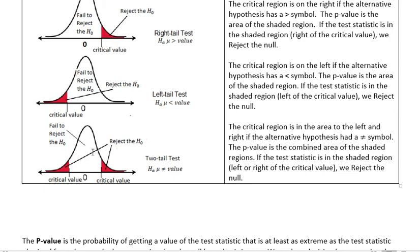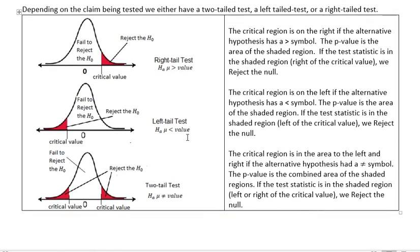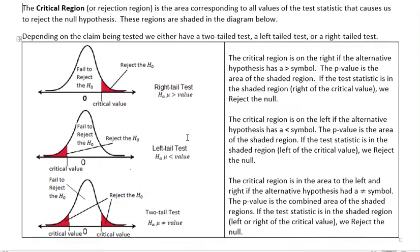And so we would say fail to reject in the center, but reject if our test statistic falls in either of the left or right regions. So that's really the crux of how the critical regions and the test statistics and the significance levels, they're all related because we use one to help us compare to the other to decide whether to reject or fail to reject the null.